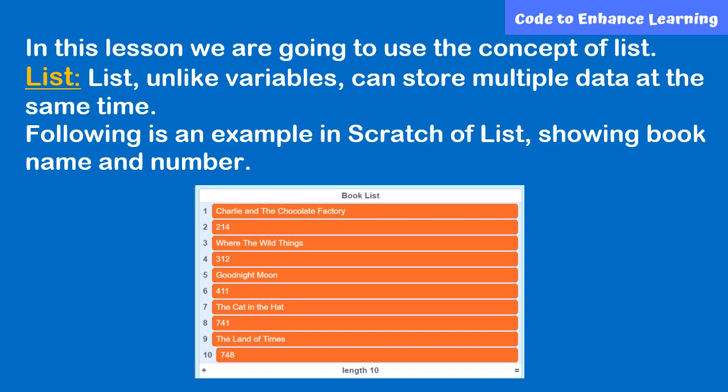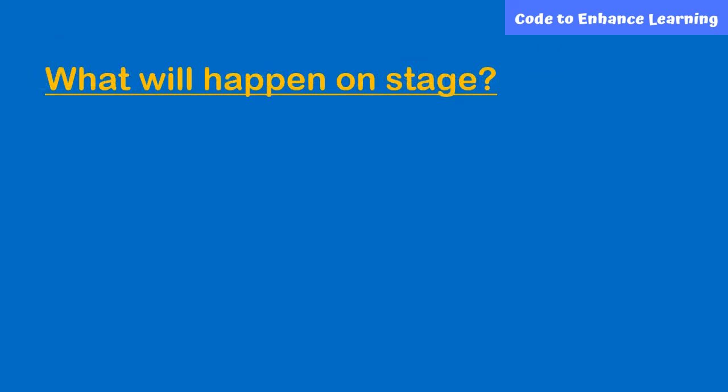List, unlike variables, can store multiple data at the same time. Refer to the image below — you can see a list called book list. Each value stored in the list has a specific place in the list. You can also alter the value stored in the list and even manipulate them.